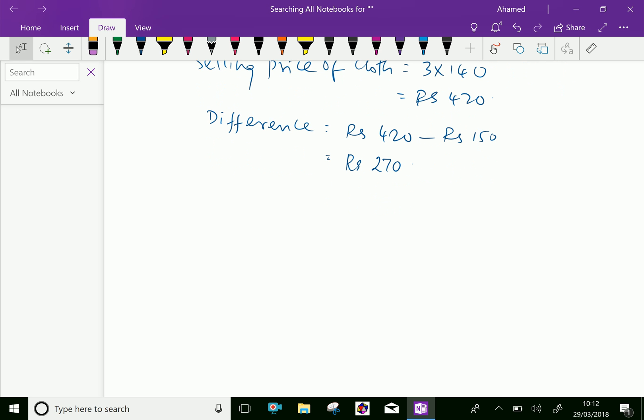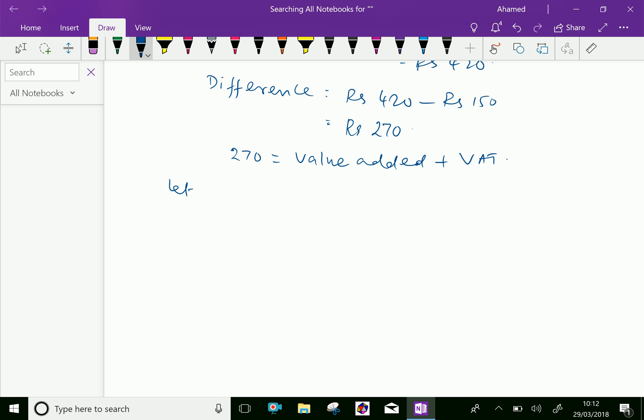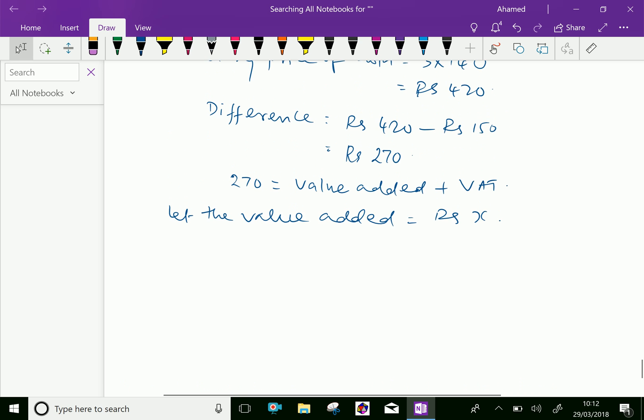Therefore, here, the difference 270 equal value added plus VAT. So, let the value added plus VAT equal X. Therefore, we can make an equation like 270 equal X plus VAT is 8%, that is 8 by 100 of X.